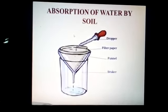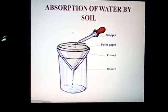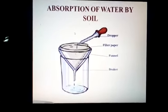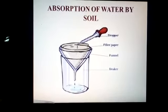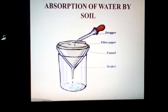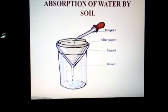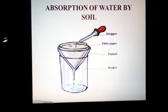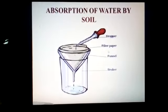For this activity, take a plastic funnel and a filter paper. Fold and place the filter paper as shown in the figure, in the shape of the funnel, and insert it inside the funnel. Now weigh 50 grams of dry powdered soil and pour it into the funnel slowly.